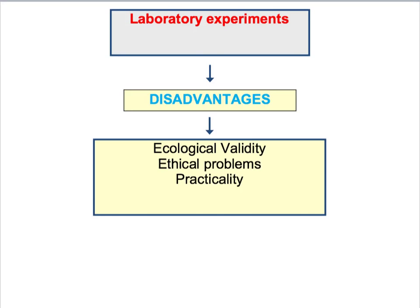However, laboratory experiments are very much a minority method in sociology. Most sociologists argue that there are a number of really serious weaknesses to this approach that make it inappropriate for a subject like sociology. For example, many sociologists argue that one of the main problems with laboratory experiments is they lack ecological validity — because experiments take place in artificial situations, they don't necessarily reflect how people would actually behave in a real-life setting. There can also be ethical problems with certain types of experiments, particularly if the experimental situation causes harm or distress.